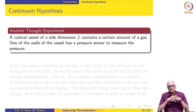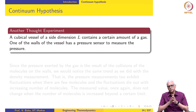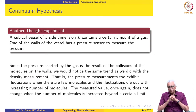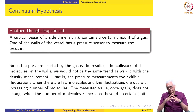Let us do the same experiment but this time measuring pressure instead of density. We place sensors at different locations on the walls of the vessel. As we know from high school physics, pressure is the force exerted by the molecules on the wall per unit area. The pressure sensors measure the force exerted, and we convert that into pressure based on the sensor area. Again, we notice that just like density, the pressure values also show similar fluctuations which die out as the number of molecules is increased, and once the number exceeds a certain threshold the values remain constant.